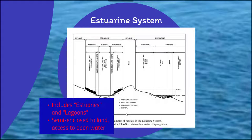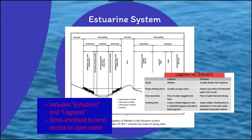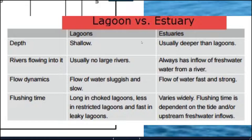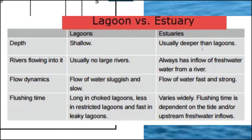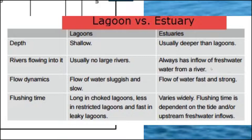Sometimes lagoons are included in reference to these types of wetlands. To differentiate between lagoons and estuaries: lagoons tend to be shallow, whereas estuaries are deeper. There's typically no large rivers flowing into a lagoon, but there always is for an estuary — you're always going to have an inflow of fresh water from some form of a river. Flow dynamics are sluggish and slow for the lagoon and faster for the estuary due to river access.